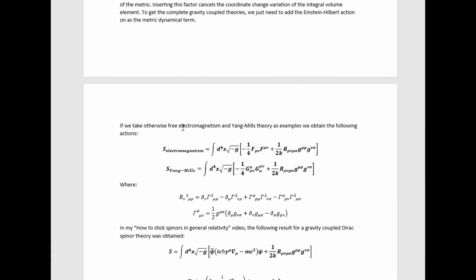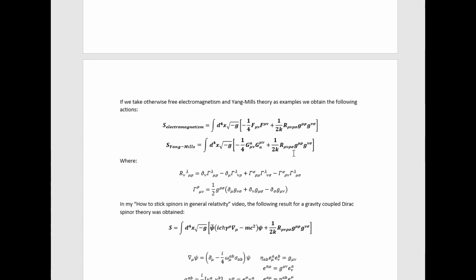If we take the otherwise free electromagnetism and Yang-Mills theories as examples, we obtain the following actions. So we've got the dynamical term for the graviton in the form of the Einstein-Hilbert action. We have the dynamical term for the gauge bosons,